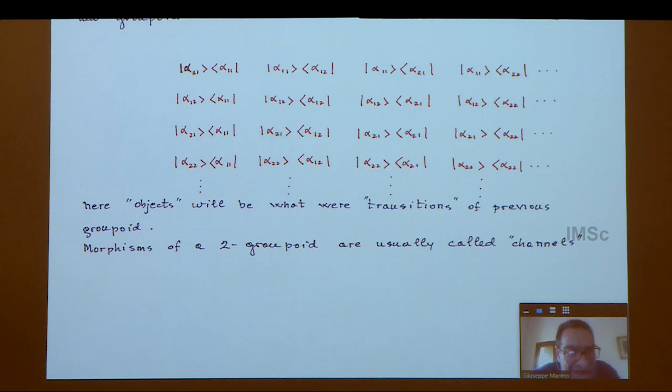As we constructed the tensor spaces on the Lie algebra, the Heisenberg-Weyl algebra I gave, you can construct what are called the two-groupoids. Essentially, you take all the elements of the previous one and make them the objects. So now you construct transitions from one object to the other.